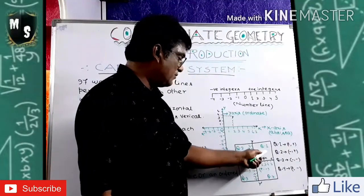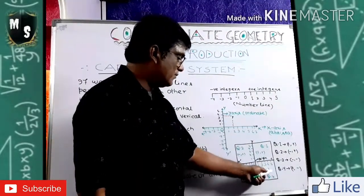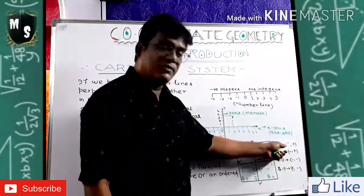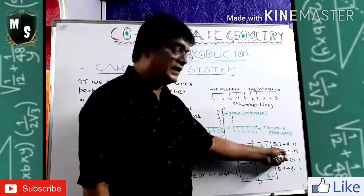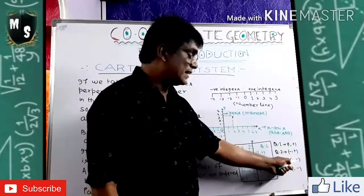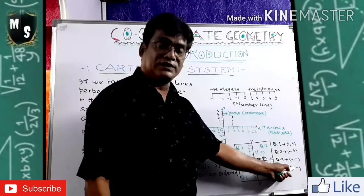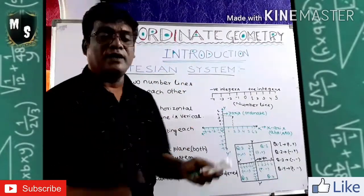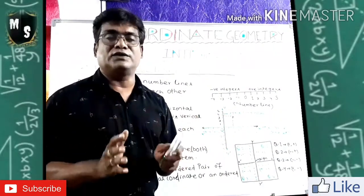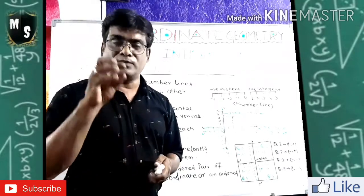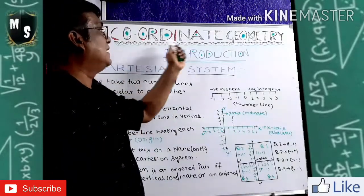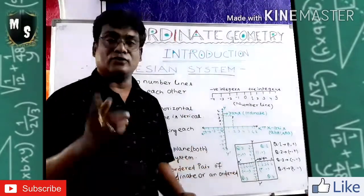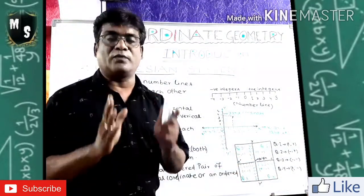Quadrant one is always positive and positive — X will be positive and Y will be positive. Quadrant two: X will be negative and Y will be positive. Quadrant three: X negative and Y also negative. Quadrant four: X positive and Y negative. I hope you got an idea about the Cartesian system and the introduction of coordinate geometry, the quadrants and their symbols, the ordered pairs of their symbols.